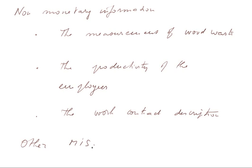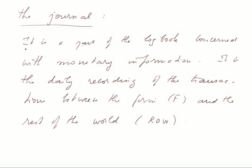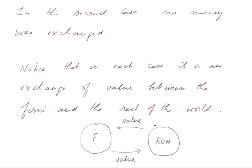Let's look now at an important and formal concept in accounting: the journal. The journal is a part of the logbook concerned with monetary information. The logbook is an informal term used in this course, but it is not an official one in accounting. Whereas the journal is an official term and concept in accounting. It is the daily recording of the transactions between the firm, F, and the rest of the world, abbreviated ROW — an exchange of value between the firm and the rest of the world, both with the same monetary measurement.